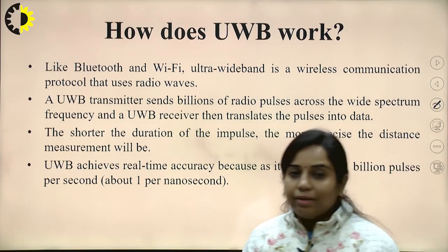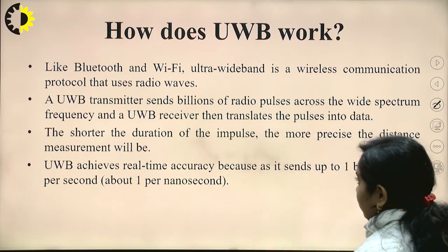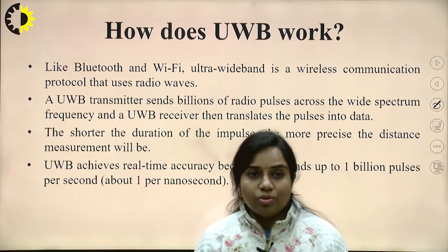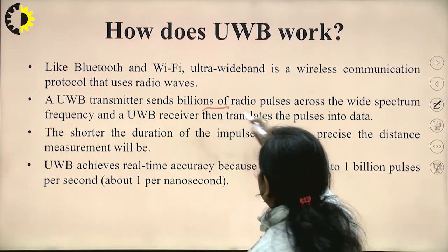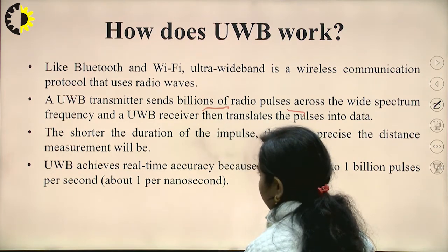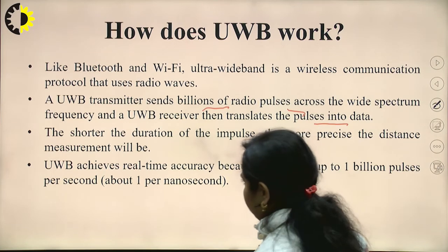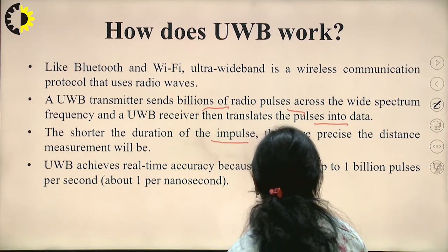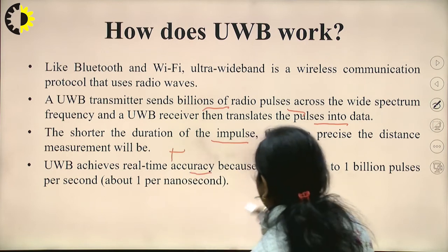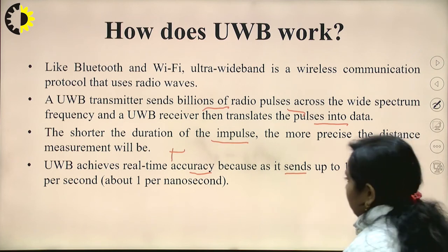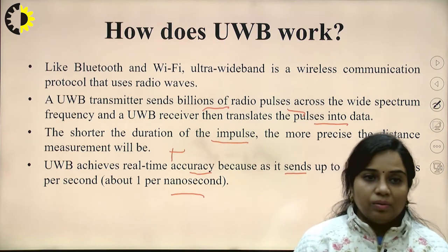How does UWB work? Like Bluetooth and Wi-Fi, UWB is a wireless communication protocol that uses radio waves — it does not use light for transmission. UWB transmitters send billions of radio pulses across a wide spectrum frequency, and a receiver translates those pulses into data. The shorter the duration of the impulse, the more precise the distance measurement will be. UWB achieves real-time accuracy by sending up to 1 billion pulses per second — this is the data rate provided by UWB.